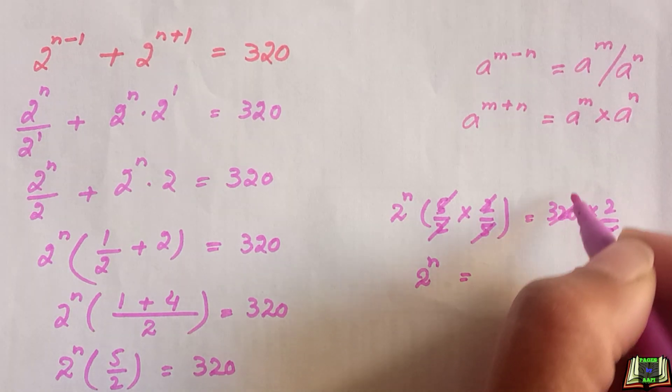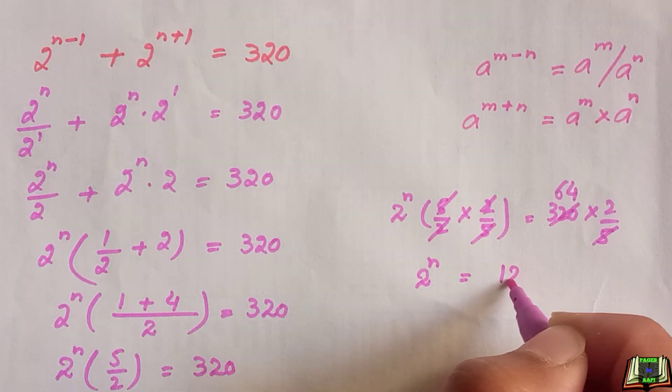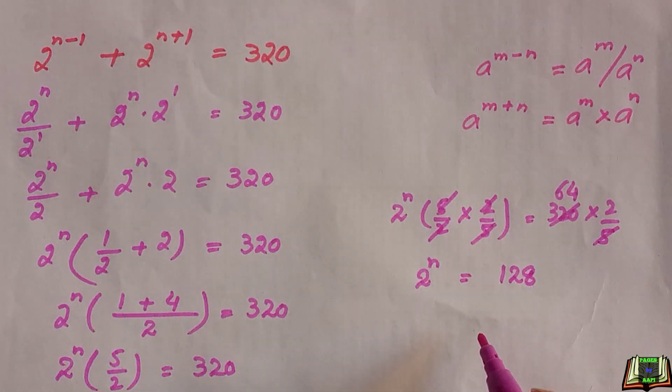2 raised to power n is equal to 320 times 2 divided by 5. 5 one time is 5, and 5 six times is 30. 5 four times, 4 is 20, 64 times 2 is 128.